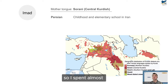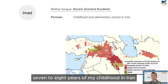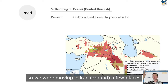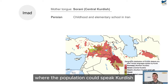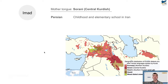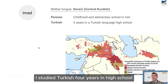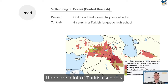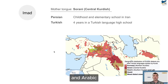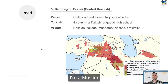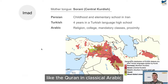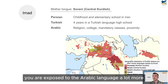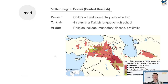I learned Persian as a child in Iran — I spent almost seven to eight years there in elementary school, learning Persian and Kurdish simultaneously. We moved around; some places had Kurdish speakers, others were fully Persian. For Turkish, I studied it four years in high school when we returned to Iraqi Kurdistan, where there are many Turkish schools. Arabic came through religion — as a Muslim, I read the Quran in classical Arabic — and also through mandatory classes and proximity to Arabic speakers.